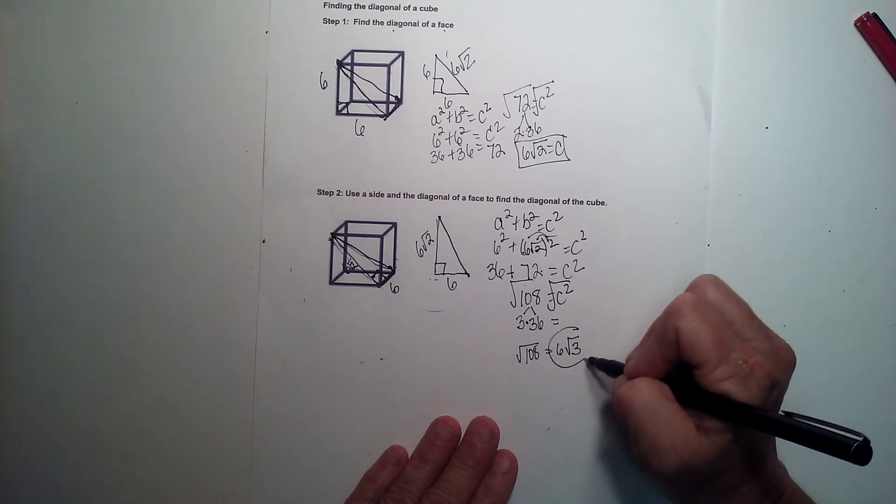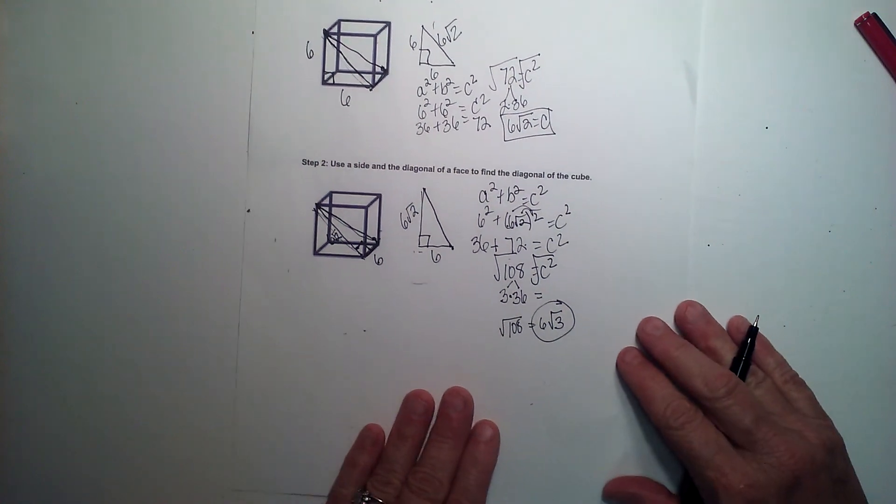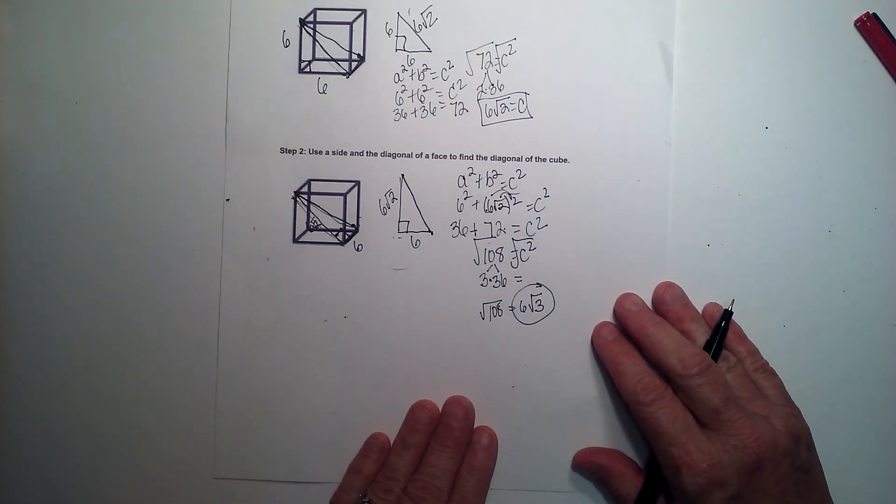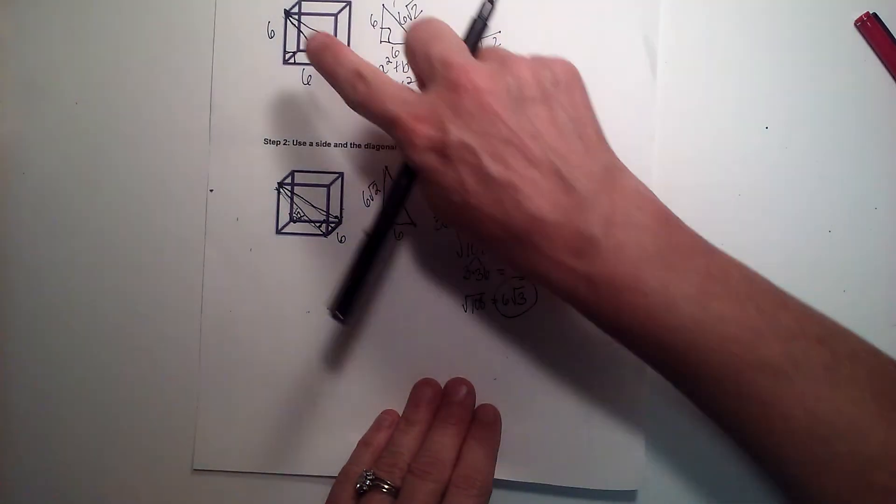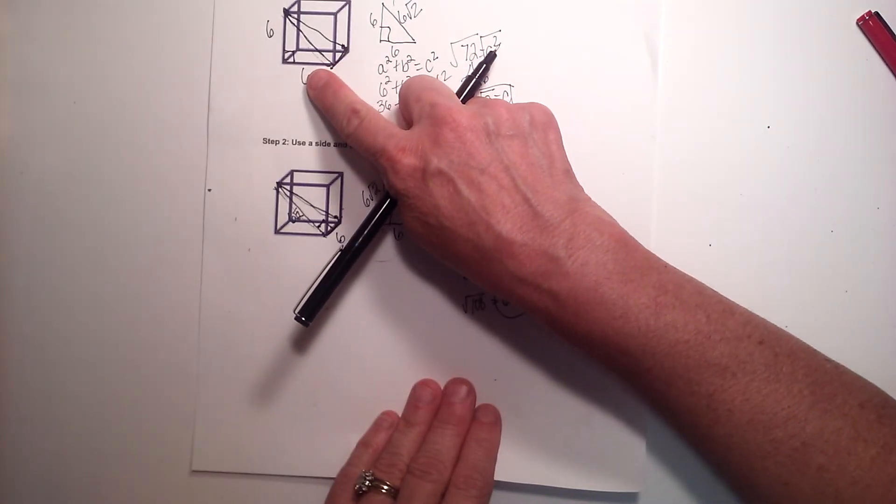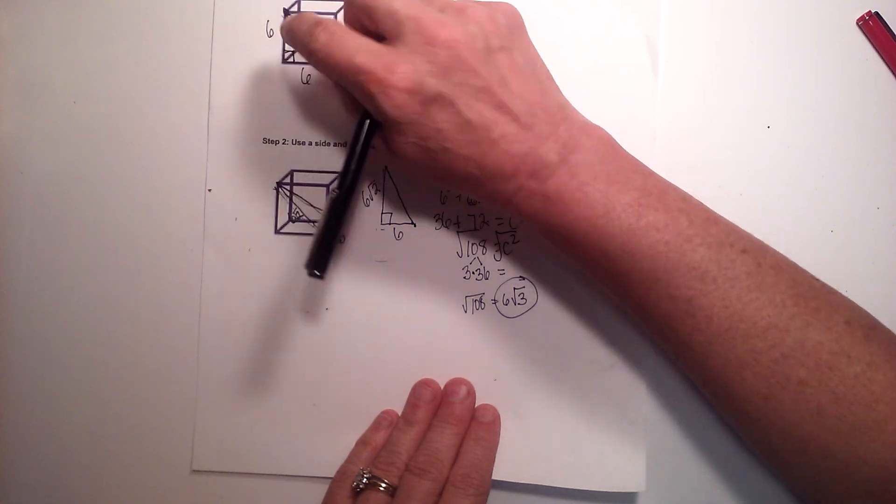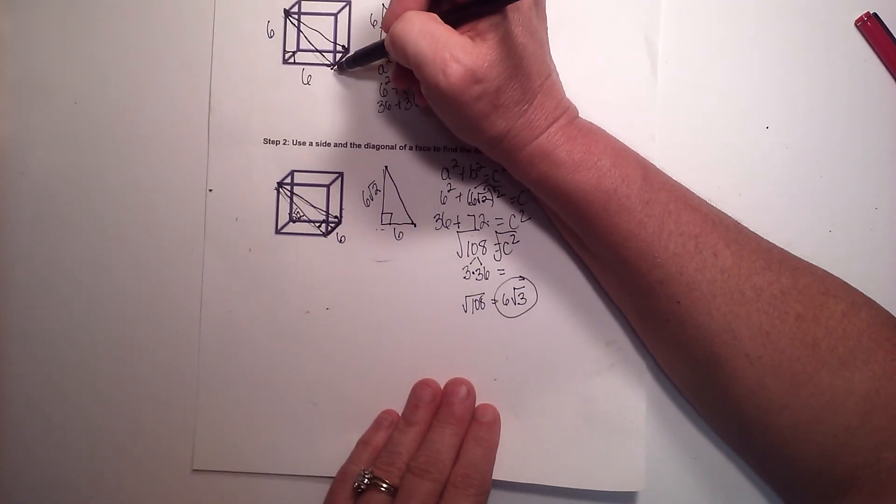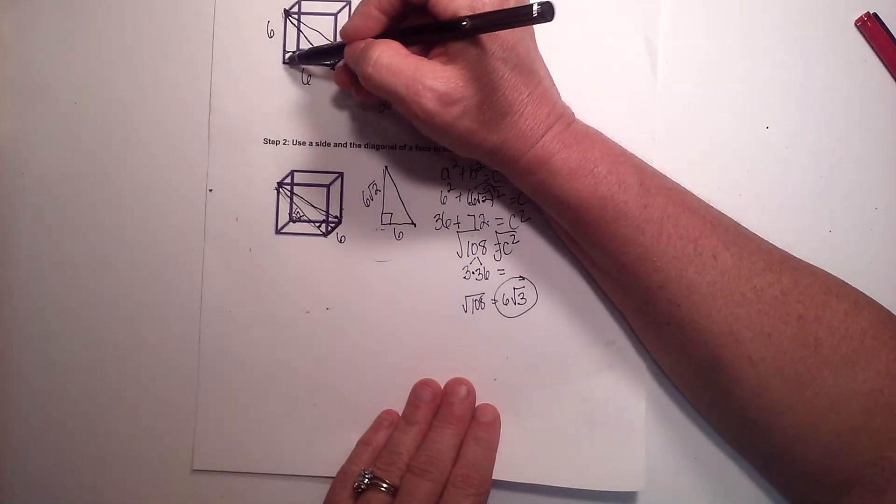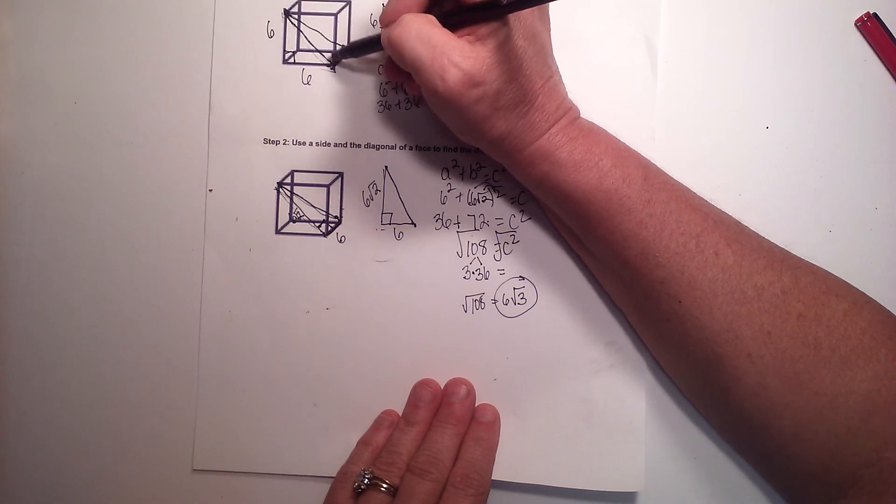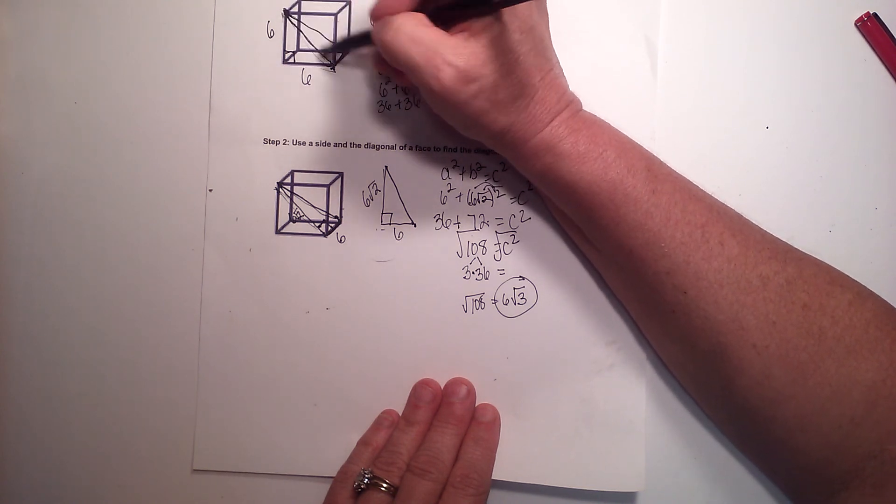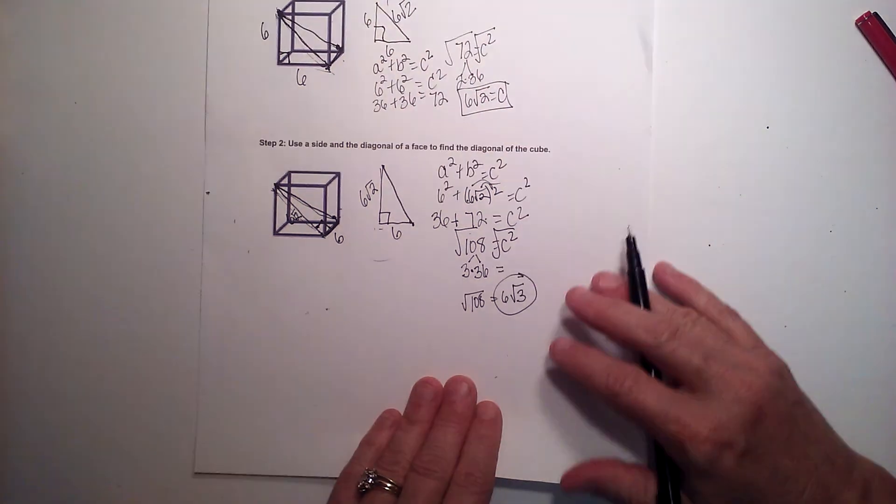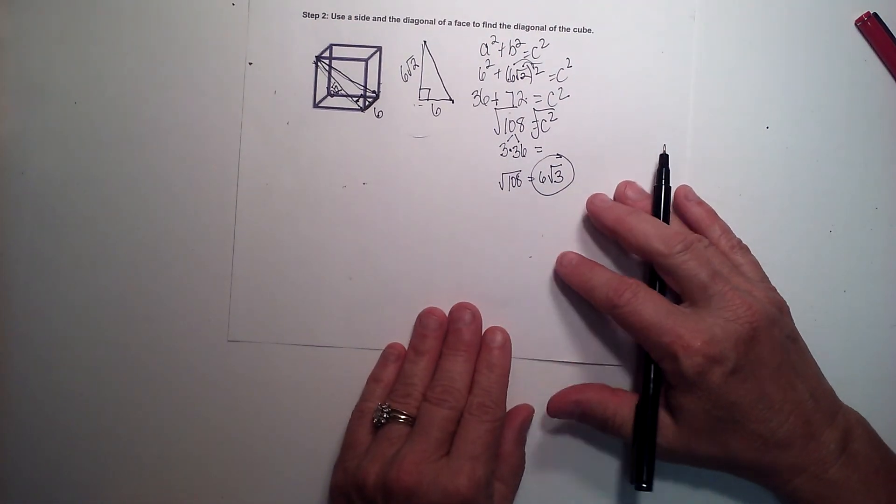And there's our answer to the length of the diagonal of the cube. So I want you to kind of look at this. What's going to happen is each time, no matter what the length of the sides are, you're going to find the length of the diagonal, and it's going to be the side times the square root of 2. And when you plug that into the Pythagorean Theorem, you're going to get this side times the square root of 3. So we can actually write a little shortcut formula.